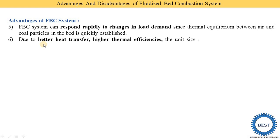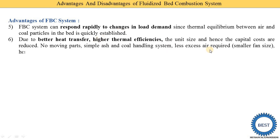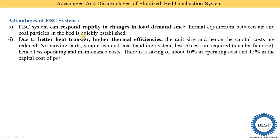Due to better heat transfer, higher thermal efficiency is achieved and the unit size is reduced. This is because Q = mCpΔT and the required mass — which depends on the heat transfer area — is lower when heat transfer is better. Therefore the capital cost is also reduced. Additionally, there are no moving parts in the coal handling system, making it simpler.